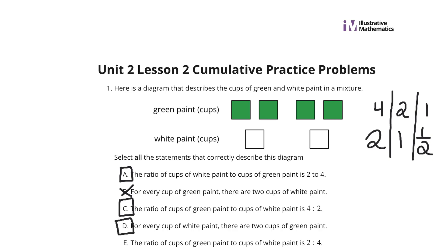And in E, the ratio of cups of green paint to cups of white paint is 2 to 4. So, green to white, 2 to 4, that is not true. It's 4 to 2 going that way. Let's go to question 2.